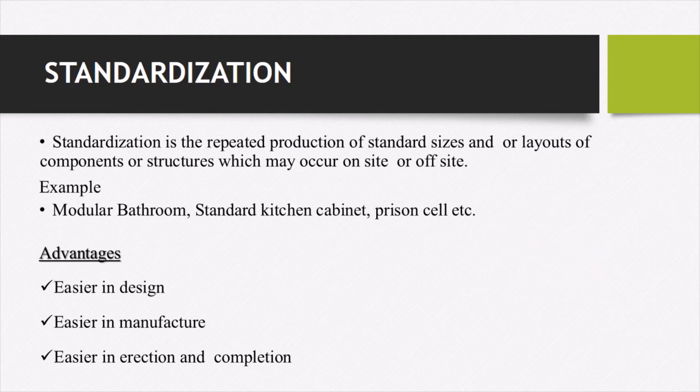Standardization is defined as the repeated production of standard size and/or layouts of components or structures, which may occur on-site or off-site. The best examples are modular bathrooms, kitchens, cabinet, prison cell, etc. Generally we refer the word 'standard' to mean dimensions or some other things which will be in a standard way.